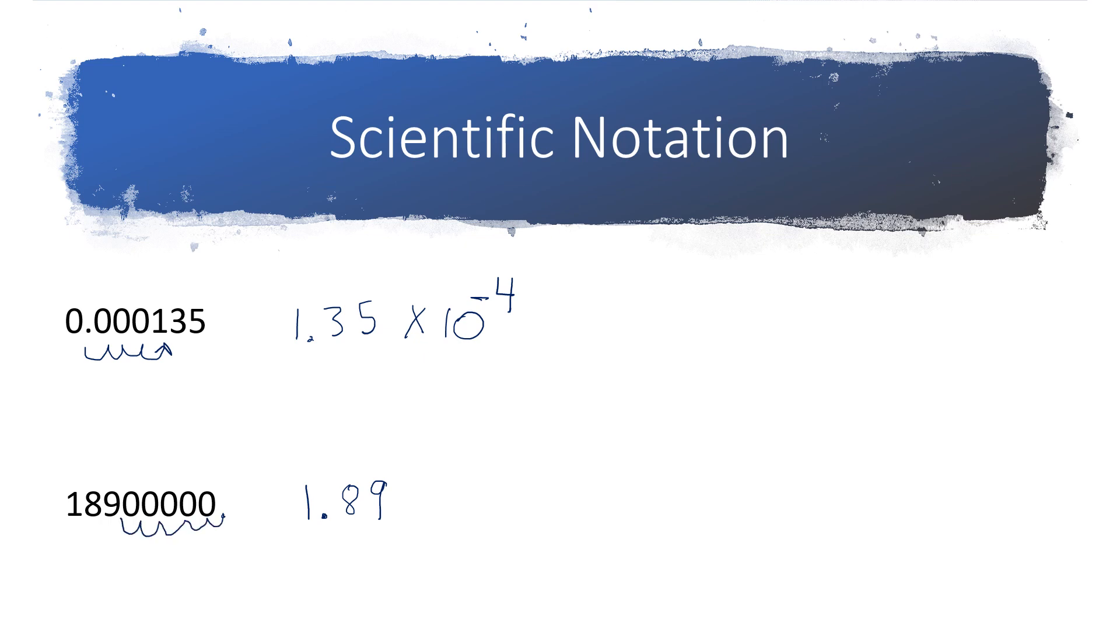5, 6, 7. I moved it seven times. So I'm going to multiply times 10 to the seventh. Now, since this number started off as a big number, something that was greater than one, it's going to have a positive exponent. So I just leave it as a 7. So what are we going to do here when we write the number in scientific notation?